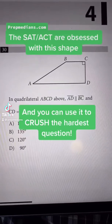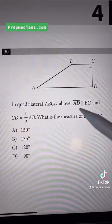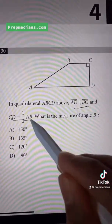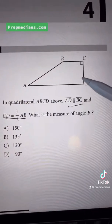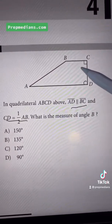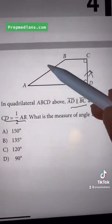The SAT and the ACT are obsessed with triangles, and specifically, right triangles. Look at this question over here. It tells us that AD is parallel to BC, and CD is half of AB. Let's mark that up. AD has to intersect CD at a right angle because it's parallel to BC. And we know that this is half, call that X, of this, 2X.